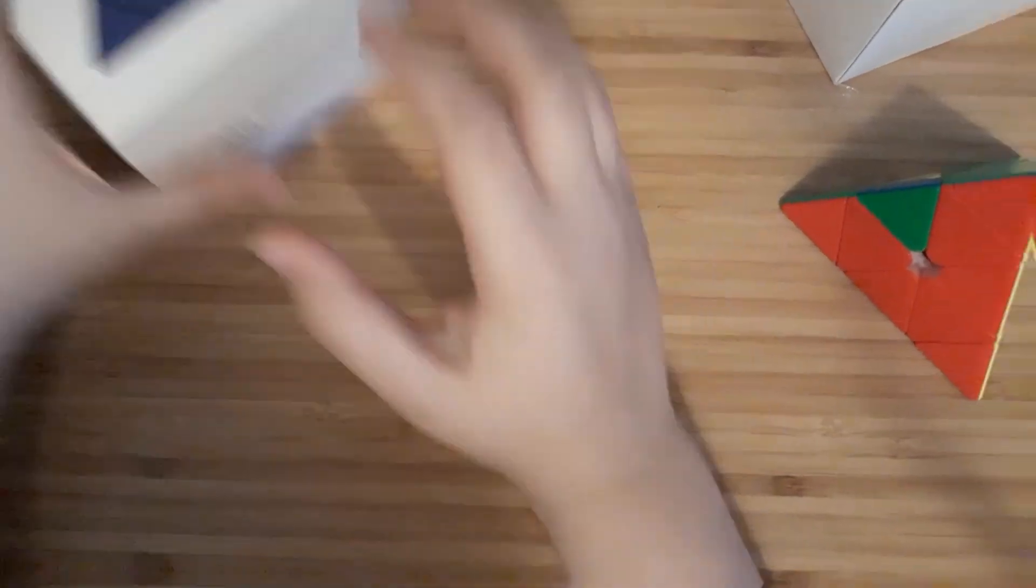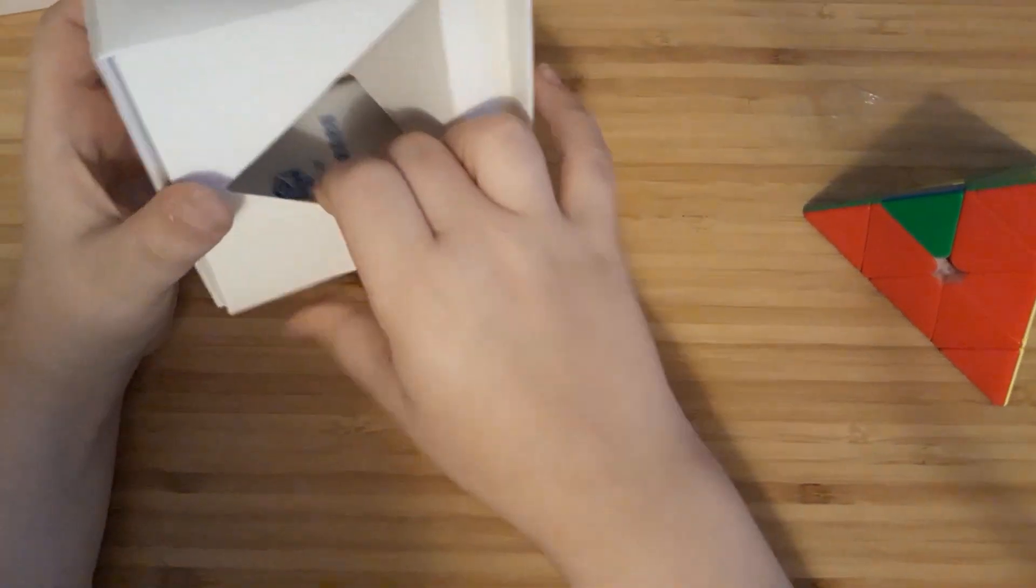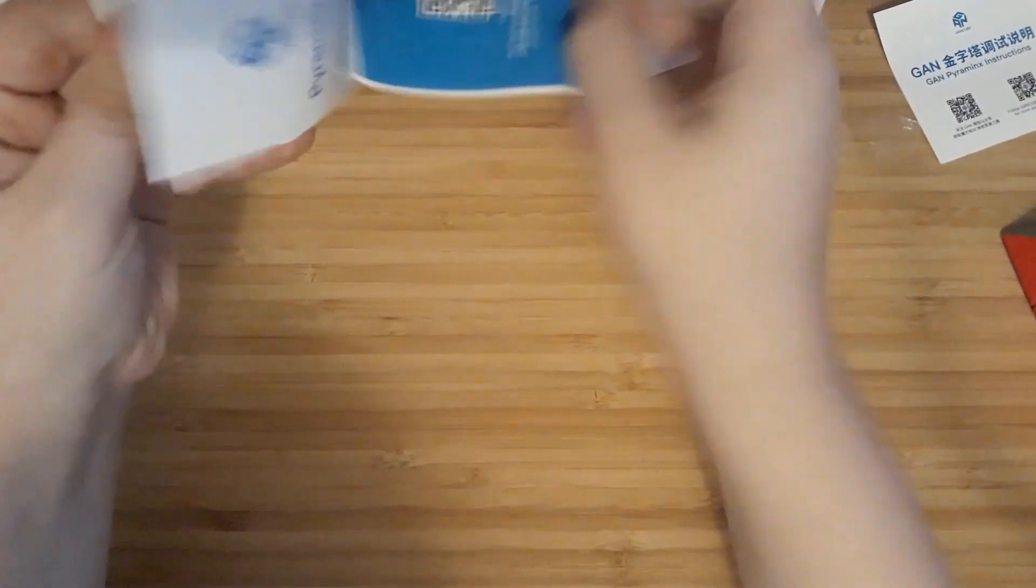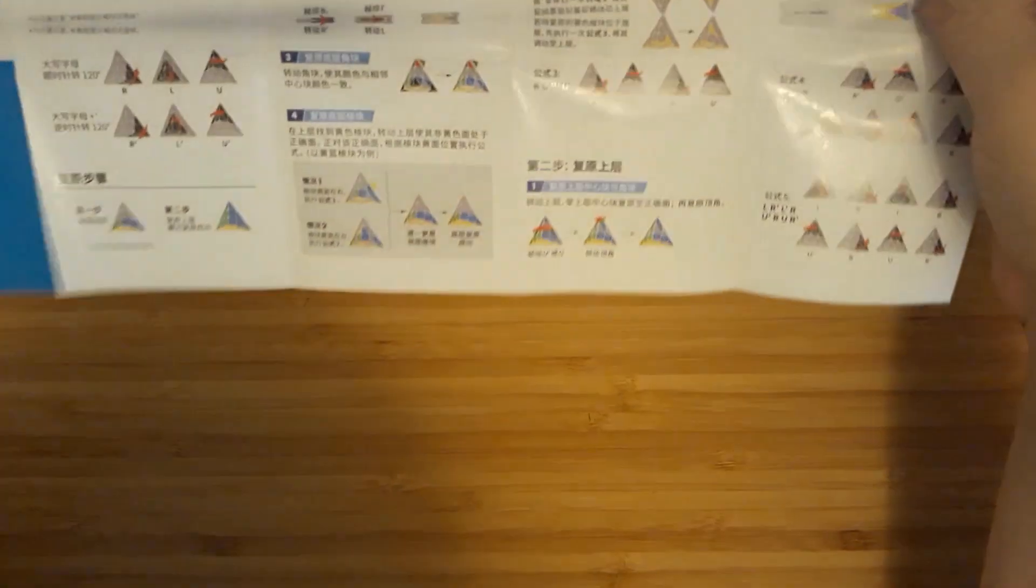All right, let's look at anything extra in here. So, you know, we have the little nice little pieces, have some setup instructions for the magnets, I guess. And then of course we have our little solve manual, which I'm not going to need because I'm just going to look up a tutorial on YouTube.